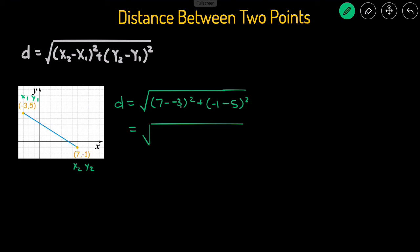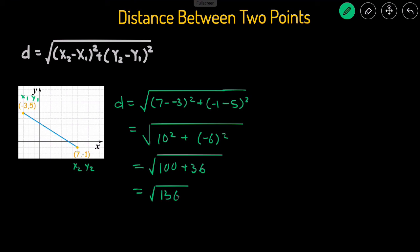So 7 minus negative 3 is the same as 7 plus 3, because double negatives make a positive. That would be 10 squared plus negative 1 minus 5, which is negative 6, squared. 10 squared is 100, and negative 6 squared is 36. So this is going to equal the square root of 136, or we can enter this into the calculator, which equals 11.66.